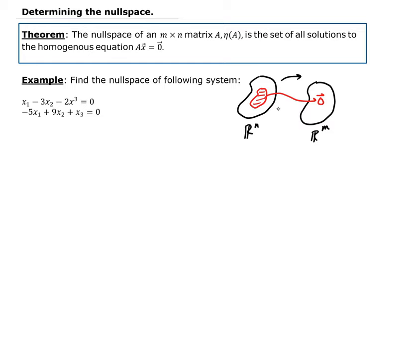So the way we're going to do this is we're going to solve for the solution to this homogeneous equation. Let's go ahead and write this as a matrix. So this will be 1, negative 3, negative 2, negative 5, 9, and 1. And I'm going to augment the zero vector onto that.